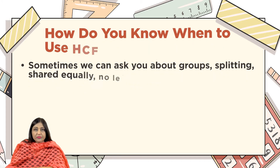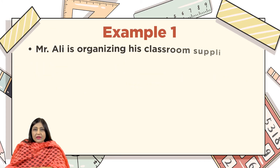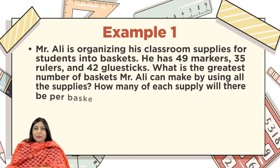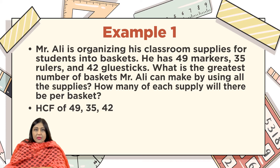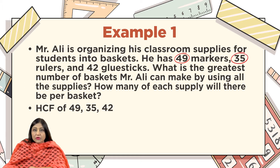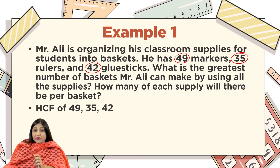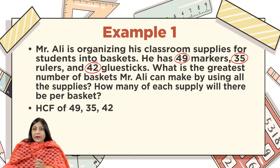If you see such words in problem sums, you are going to find HCF — that is Highest Common Factor. Let's solve the first example. Mr. Ali is organizing his classroom supplies for students into baskets. He has 49 markers — I am going to circle this 49. Whether you are doing LCM or HCF type questions, the first thing you have to do is circle the numbers. Then 35 rulers and 42 glue sticks. What is the greatest number of baskets Mr. Ali can make using all the supplies? I can see the word 'greatest,' so you have to find HCF.